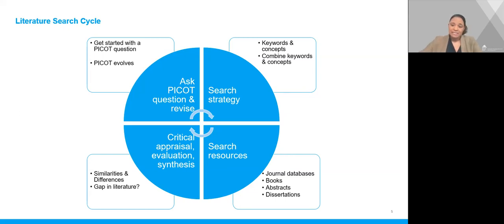The first step is to ask a research or PICO question so that you can come up with keywords and concepts. Once you have your keywords and concepts, you can search the literature, which may include journal databases, books, abstracts, or even dissertations. The literature you find can then be critically appraised, evaluated, and synthesized. Then you may decide you need to revise your research or PICO question, and if so, you will begin the process again. More detail about these steps are described in the next few slides.